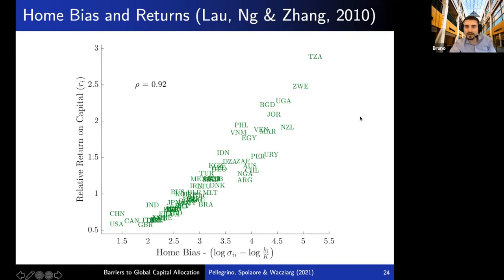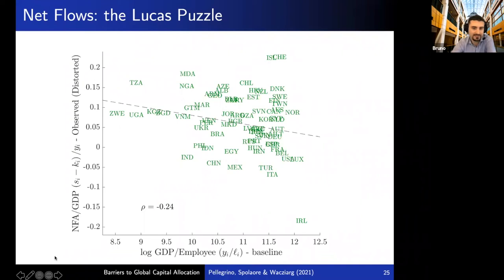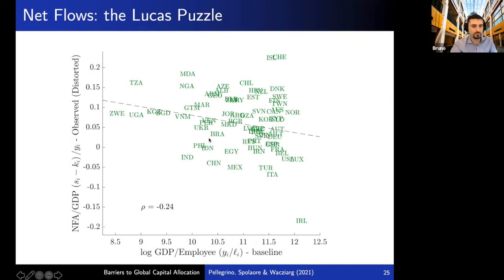Looking at net flows: on the vertical axis, net foreign assets divided by GDP — whether a country is a net investor or net receiver — plotted against log GDP per employee. The model reproduces the fact that poor countries tend to be net investors while rich countries tend to be net receivers of capital. Capital seems to flow upstream.